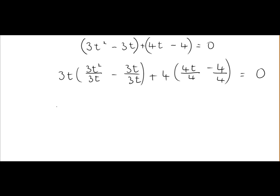Next we'll complete our division. So 3t squared divided by 3t is just t. 3 divided by 3 is 1. t squared divided by t is just t. 3t divided by 3t is 1. Next we have 4t divided by 4 which just leaves us with t. And minus 4 divided by 4 is minus 1. Minus divided by a plus is a minus. And that's all equal to 0.